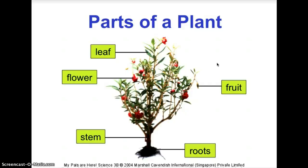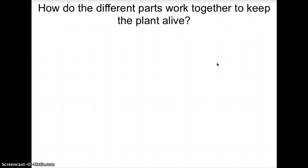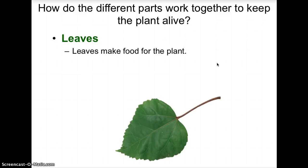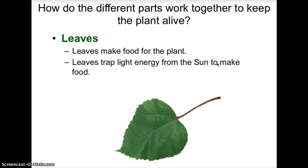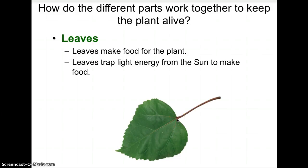Now let's learn about leaves. Leaves make food for the plant — this is a very important function. Leaves trap light energy from the Sun to make food. This process is called photosynthesis. In order for photosynthesis to occur, leaves have a green pigment called chlorophyll. Think about this: do non-green leaves also make food for the plant? We can discuss this when we meet again in the classroom.